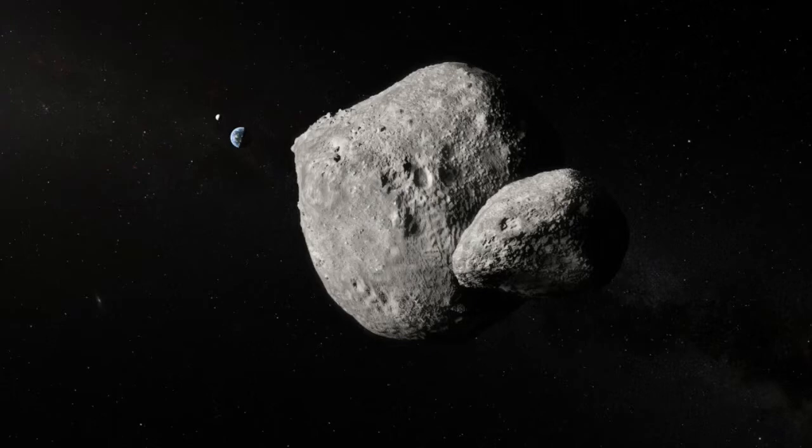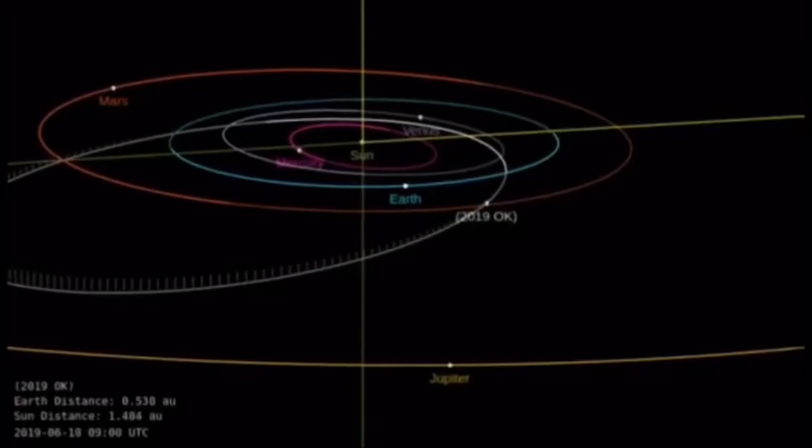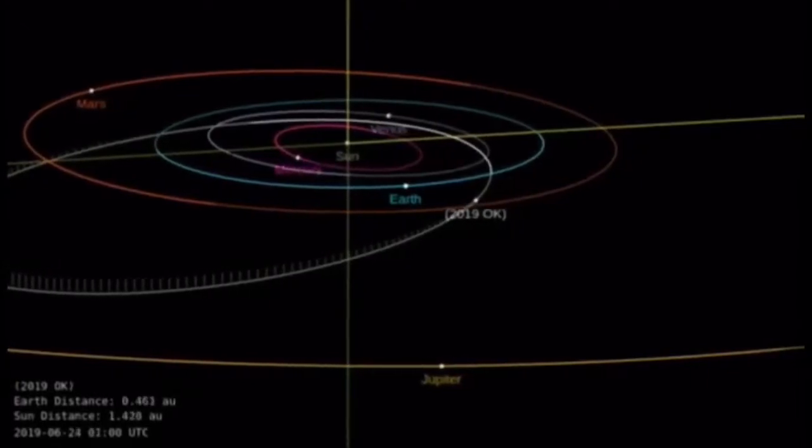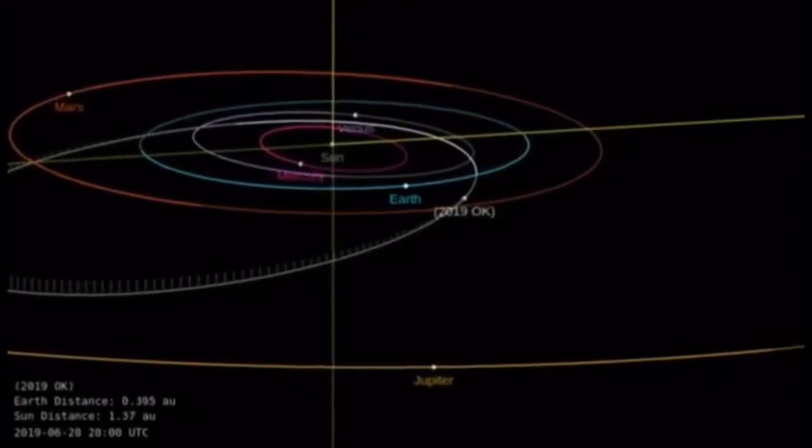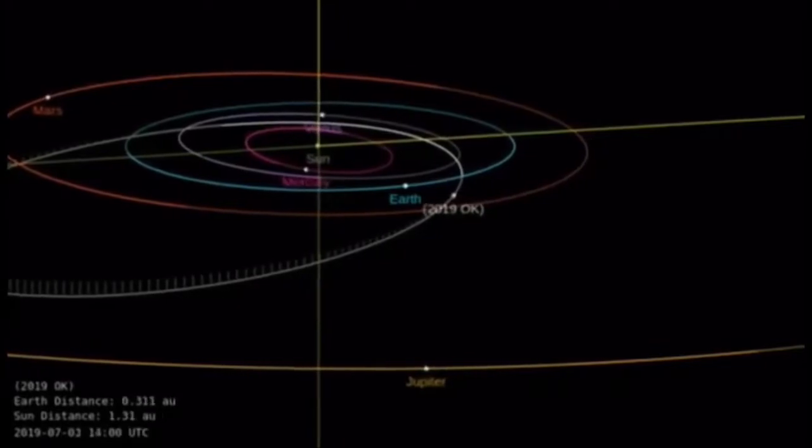This was called a city killer and it could have caused major damage. Here you will see the path of the Earth going around the Sun and how close the asteroid came.